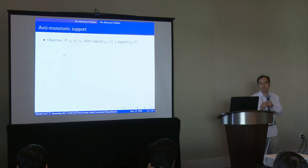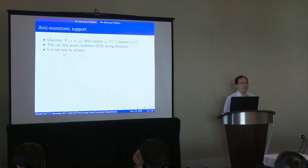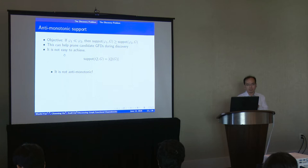Now we can see how to define the anti-monotonic support for GFD. Our objective is that if φ1 is smaller than φ2, then the support of φ1 is larger than φ2. It is to help prune the candidates of GFD during the discovery. But it's not easy to achieve. Given a pattern Q and a graph, if we define the support to be the number of matches of Q in the pattern, then it is not anti-monotonic.